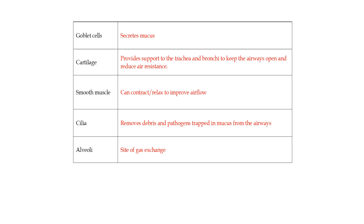If you have an overproduction of mucus, you might have a health condition. Cartilage provides support to the trachea and bronchi to keep the airways open and prevent them from collapsing. Smooth muscles contract and relax to improve airflow. The cilia are thin hair-like structures that sweep away excess mucus or debris from the airways. Finally, the alveoli are where gas exchange actually happens.